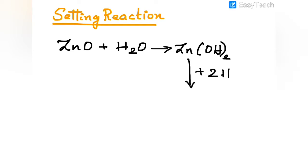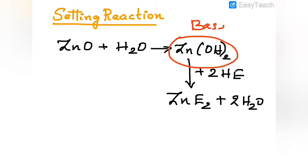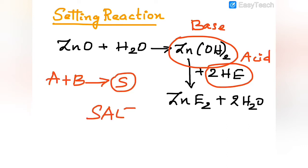The setting reaction works as follows: zinc oxide reacts with water molecules to form zinc hydroxide. The zinc hydroxide then reacts with eugenol to form zinc eugenolate and water. Here, zinc hydroxide is the base and eugenol is the acid. Base and acid react together to form salt, which is zinc eugenolate, the final set product.